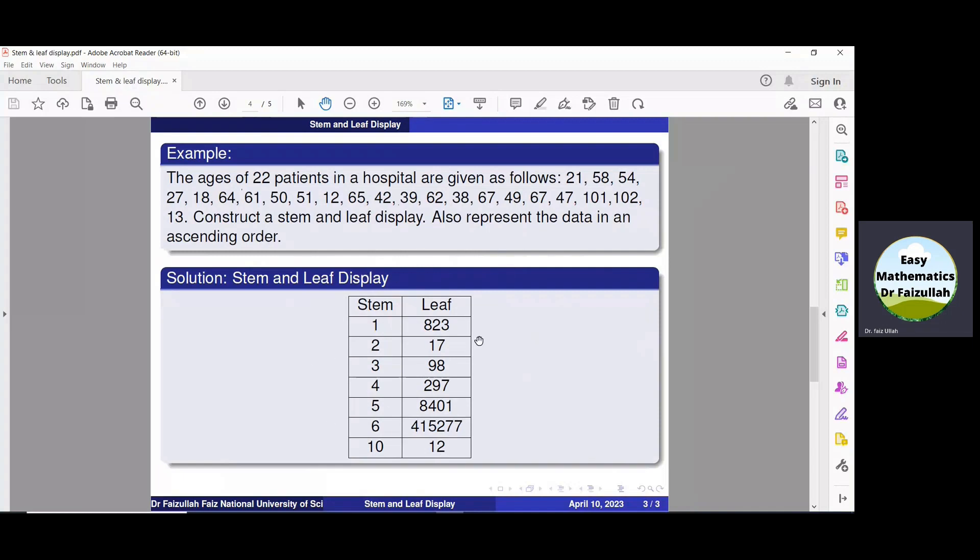So this arrangement is called stem and leaf display. And from this we can easily understand that in this hospital there are 3 patients whose age is less than 20. One is of 12 years, the other is 13 years, the next one is 18 years.